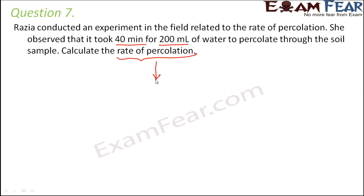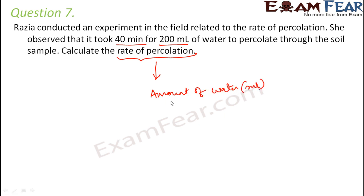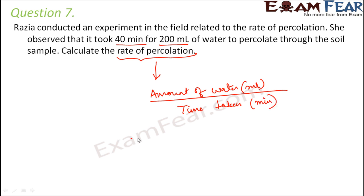How do we calculate how fast water is percolating through a soil sample? The rate of percolation is equal to the amount of water that percolated in milliliters divided by the time taken by the water to percolate. This time taken should be in minutes.